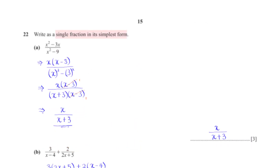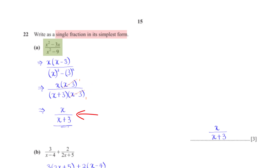Write as a single fraction in its simplest form: (x squared minus 3x) over (x squared minus 9). Factoring the numerator gives x times (x minus 3). The denominator is the difference of two squares: (x plus 3)(x minus 3). The (x minus 3) cancels, leaving x over (x plus 3).